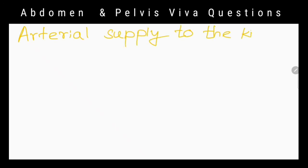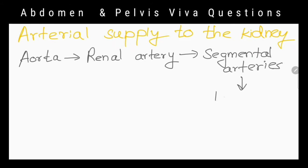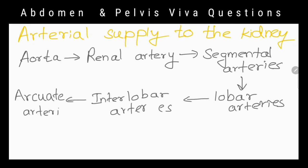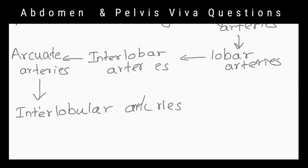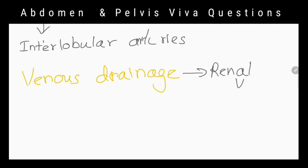Can you explain the blood supply to the kidney? Arterial supply is from the renal artery, which arises directly from the aorta. Each renal artery divides into five segmental arteries at the renal hilum, distributed to different segments of the kidney. These divide into lobar arteries for each renal pyramid, then into interlobar arteries, which give off arcuate arteries at the junction of the cortex and medulla. Arcuate arteries give off several interlobular arteries, from which afferent arterioles arise.